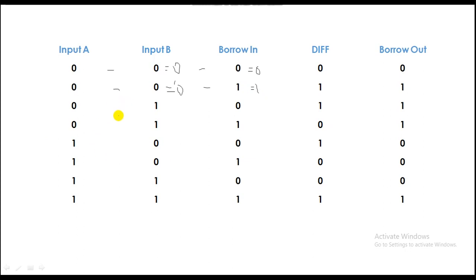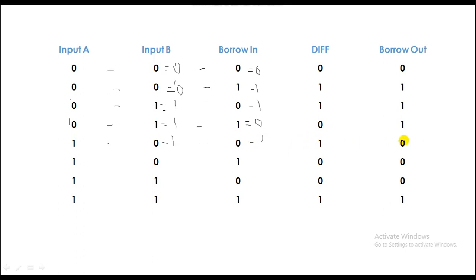Over here, zero minus one — A needs a borrow — so two minus one is one, and one minus zero is one. So the difference is one and we have also taken a borrow. Over here, zero minus one — so the difference is zero and borrow out is one because we have taken a borrow. Over here, one minus zero is one and one minus zero is one, so the difference is one and no borrow has been taken. Over here, one minus one is zero and zero.